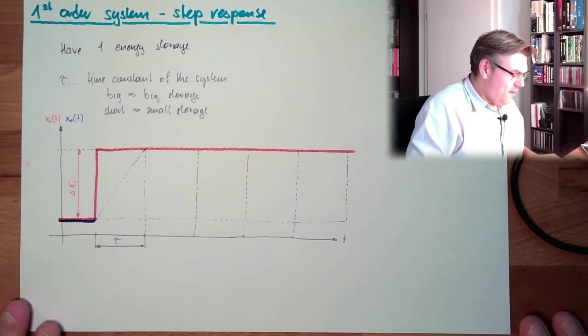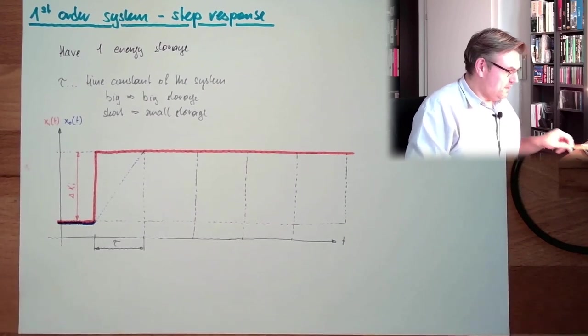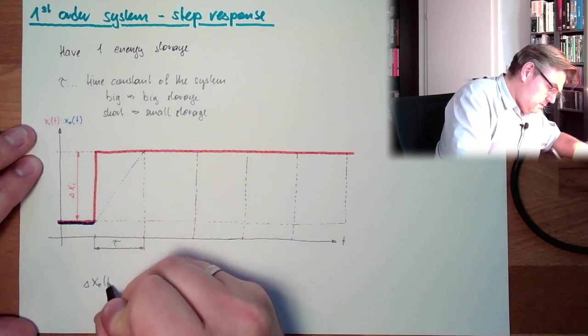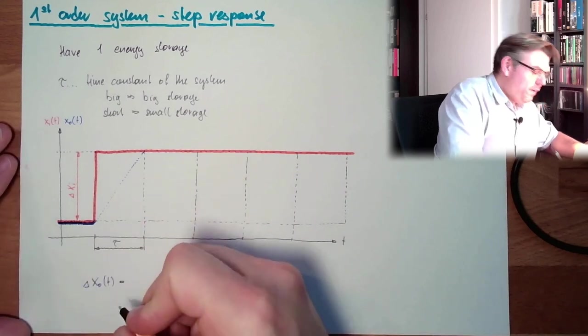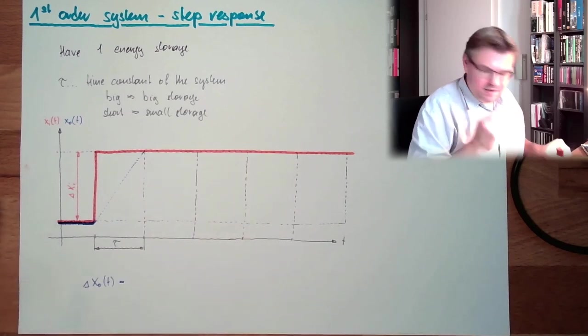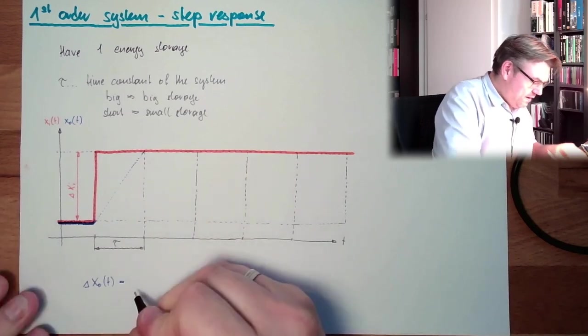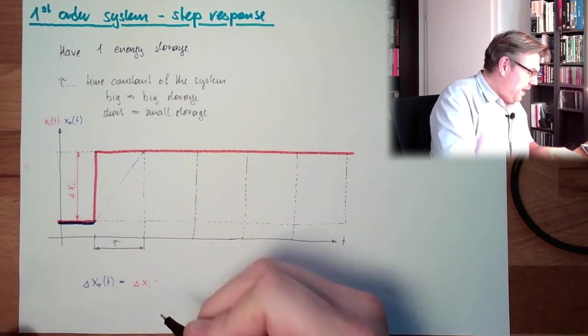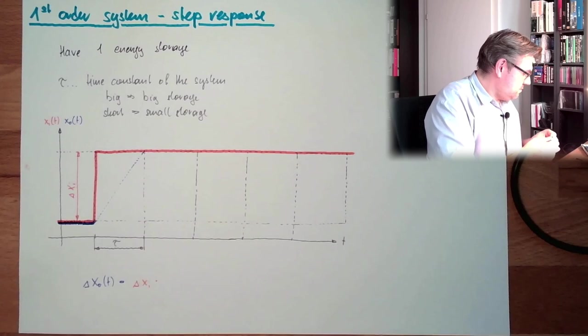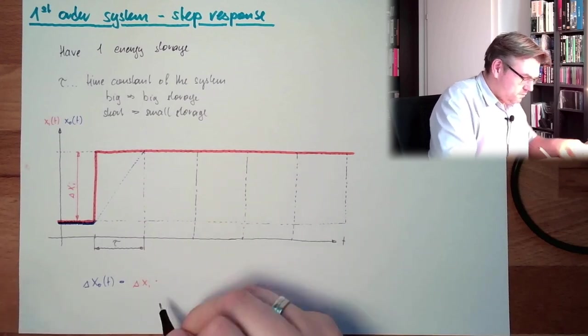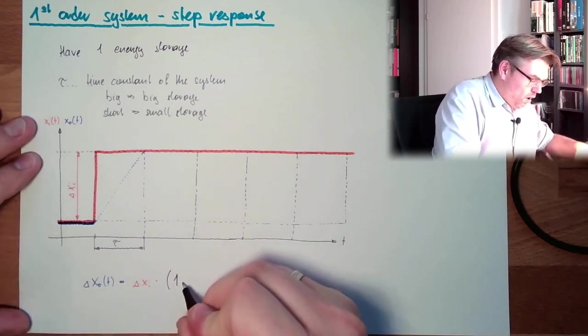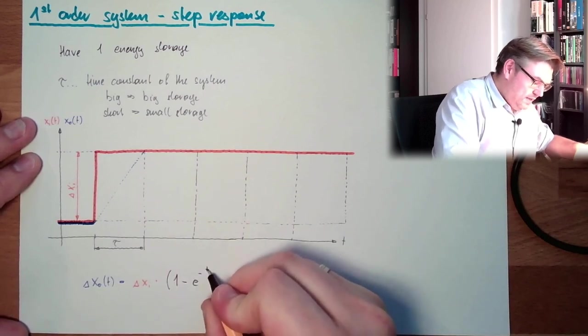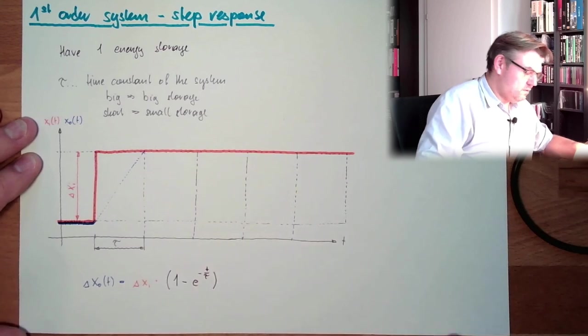Now, the output, delta xi, is following the following calculation: it's delta xi multiplied by 1 minus e raised by the power of minus t divided by tau.